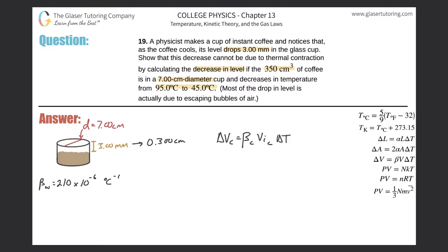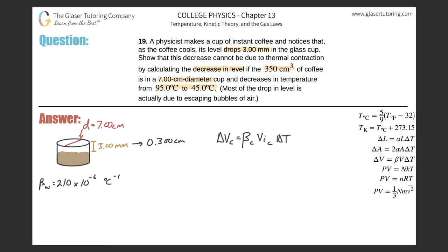We can find the change in volume, but what we really need is the change in height the coffee experiences. The coffee takes the shape of its container, which is a cylinder. So the change in volume of the coffee equals the volume change within the cylindrical container. The volume of a cylinder is πr²h, so we can relate volume change to height change.